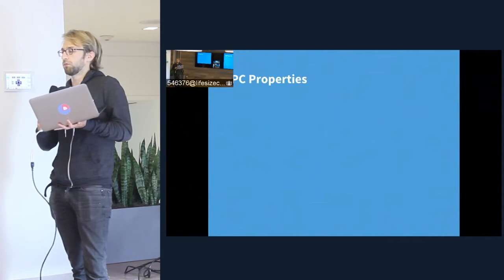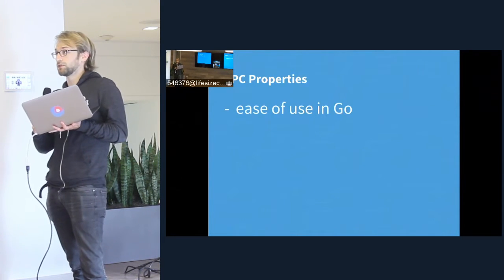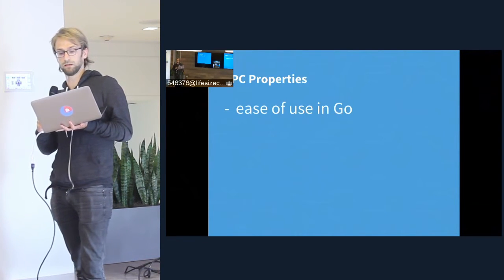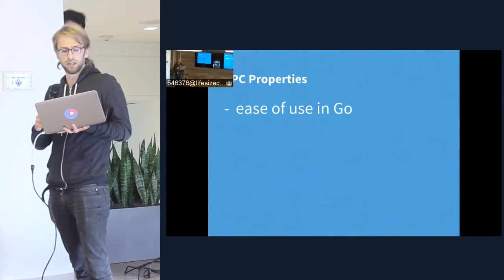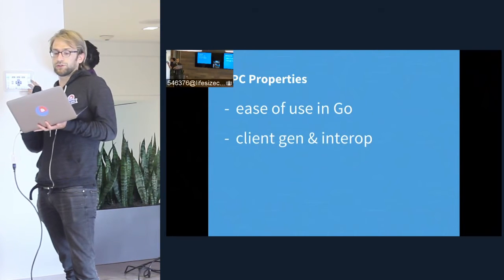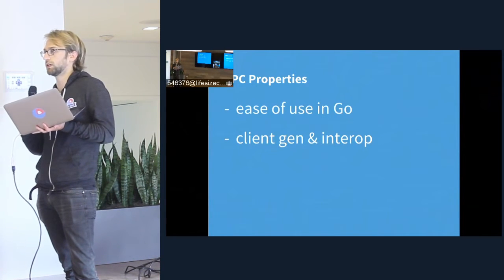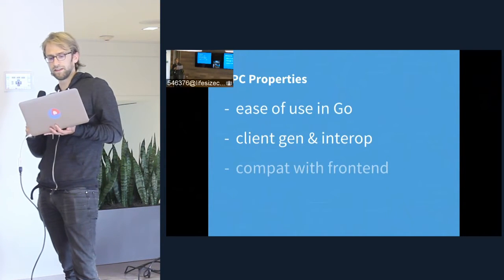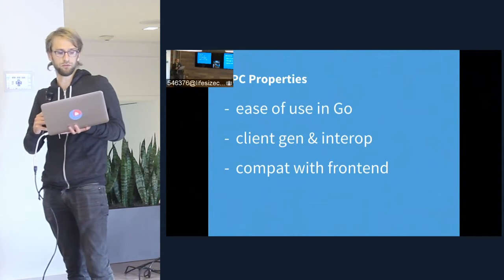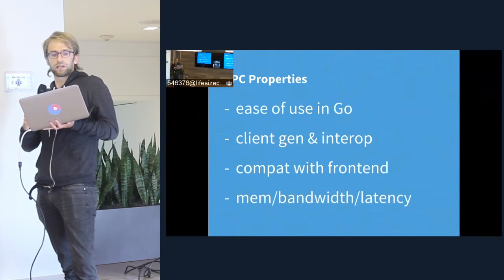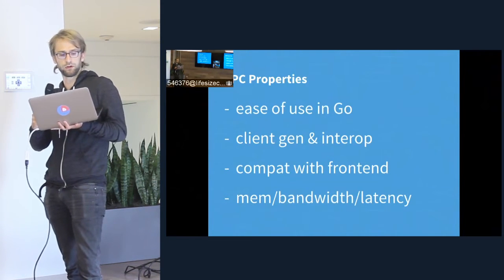I want to quickly lay out some desirable properties from an RPC system. First, since this is GoSF and we're Go developers, we want it to be really easy to use from Go — first-class support, easy to use natively without wrapping different kinds of libraries. The next important thing is being able to support different kinds of clients through client generation. We also think web frontends are very important, so we want to be able to do RPCs to our service from the browser — basically from JavaScript. And finally, we want our service to be high-performing: as efficient as possible in terms of resource usage, memory, bandwidth, and latency.